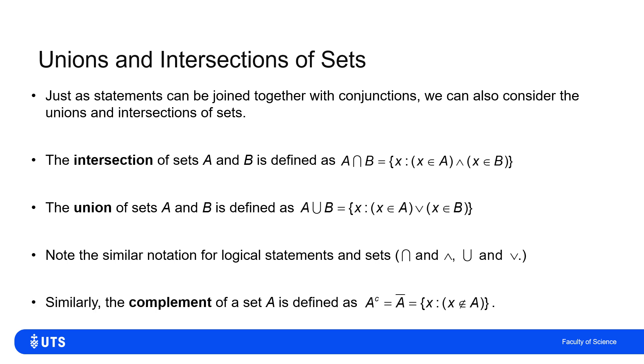And just as we had a not statement in logic, we have the complement of a set. So if I've got a set A, the complement of that, which I will tend to write as A with a superscript C. Some other courses or texts might write A with a bar above it, both of those mean the complement of a set, and that's just all x such that x is not in A.